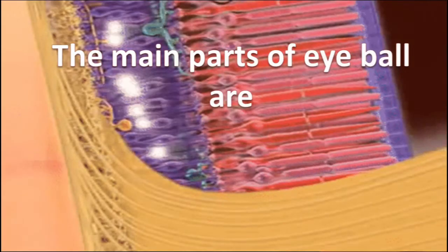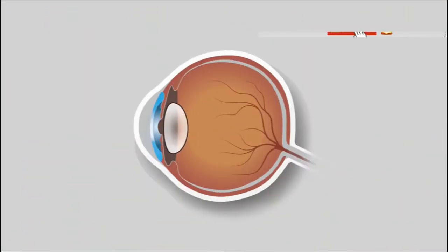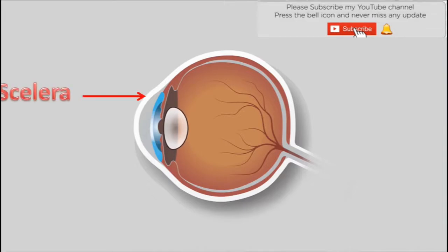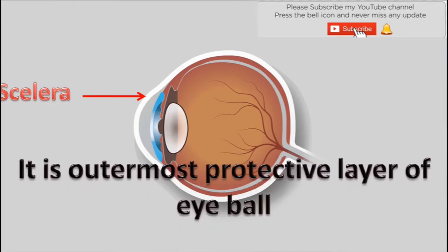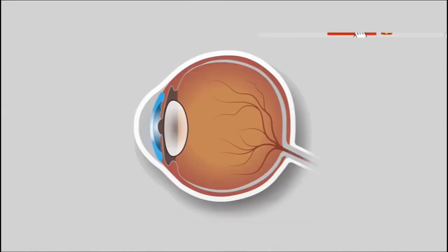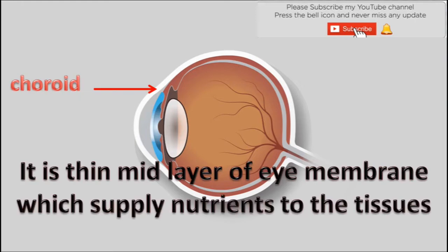The main parts of the eyeball are: Sclera — it is the outermost protective layer of the eyeball. Choroid — it is a thin mid-layer of eye membrane which supplies nutrients to the tissue present in the eyeball.